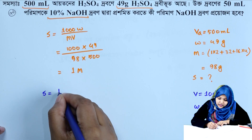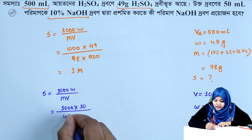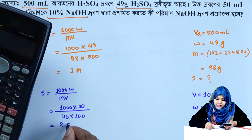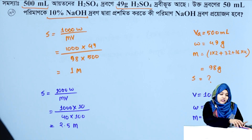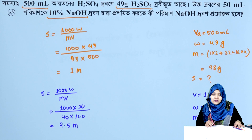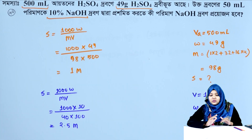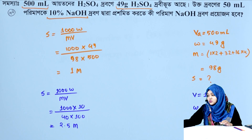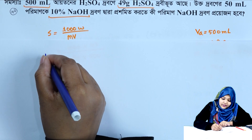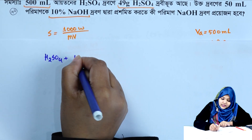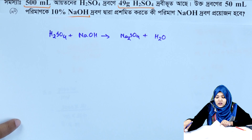We know the molarity formula. S equals 1000 times W divided by M times V. W equals 10 grams, M equals 40, V equals 100. Result: 2.5 molar. Therefore, the molarity of the base solution (10% NaOH) is 2.5 molar.